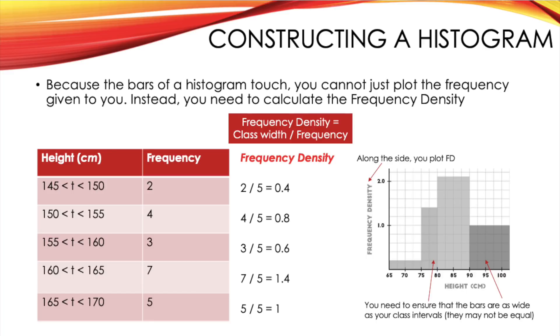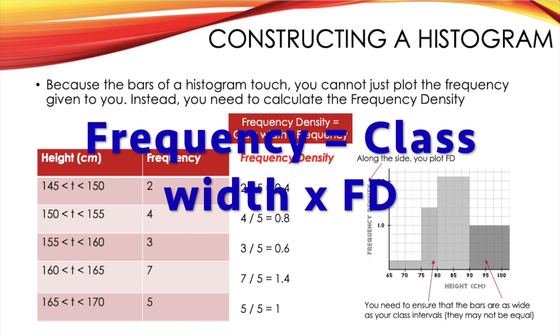They could perhaps also present you with a histogram already drawn and then ask you to work out the frequency. To do this you simply take the class width and times this by the frequency density. Looking at the histogram in the bottom of the screen,